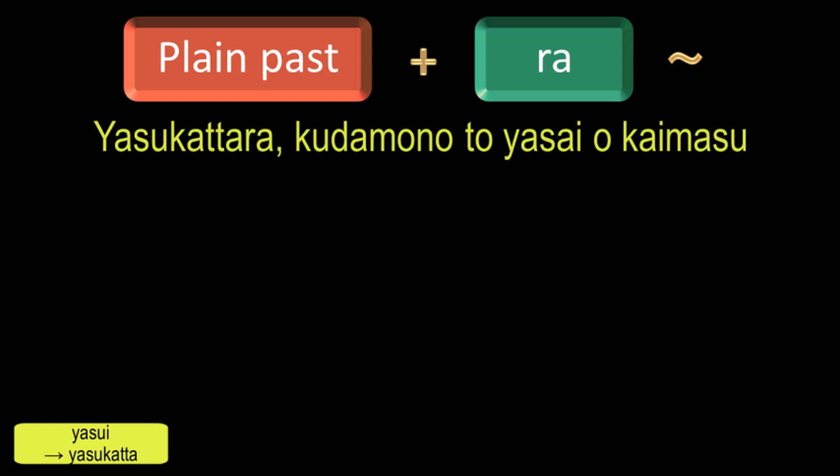Itai means painful and its plain past form is Itakatta. By adding Ra, we will get the condition Itakattara, which means if something is painful.